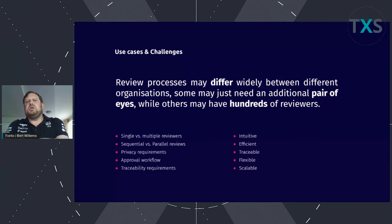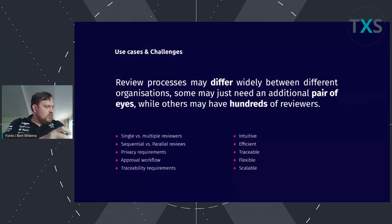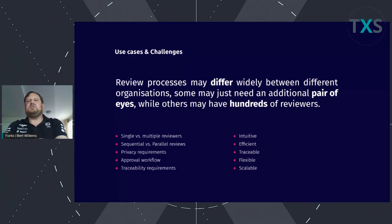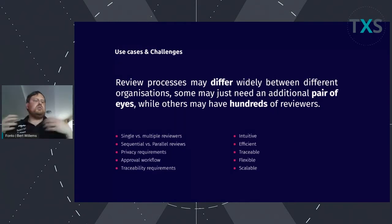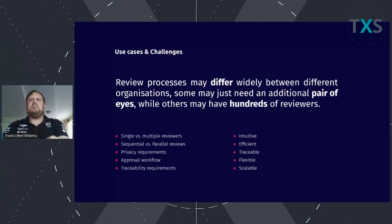We also need to talk about the approval workflow: is the reviewer required to approve the content they reviewed? There are various cases. And for traceability, an important example is the ability to show evidence of how a comment was addressed. In standardization especially, this is a core requirement — you must be able to give evidence of whether a comment was rejected as not relevant, or whether a change was made in the document due to that particular comment.